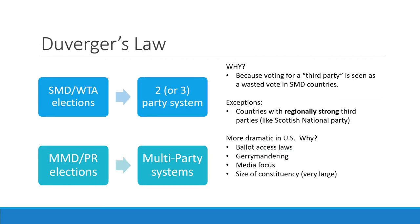A political scientist named Maurice Duverger is famous for his law, which is based on observation of different democracies with these two electoral systems and also on mathematics. Duverger's law basically says that countries with winner-take-all single-member district elections are going to have very small party systems — probably two parties, like in the United States — because voting for a third party or minor party would be seen as a wasted vote if they had no chance of winning with 20% or less support.